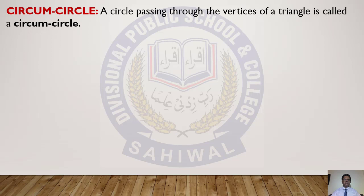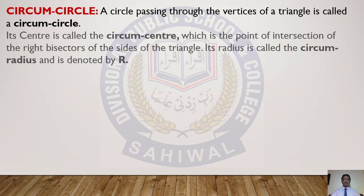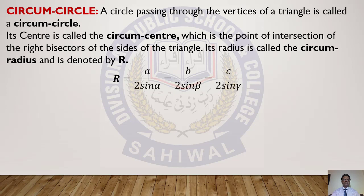Now we discuss some definitions. Circum-circle: a circle passing through the three vertices of a triangle is called a circum-circle. Its center is called the circum-center, which is the point of intersection of the right bisectors of the sides of the triangle. Its radius is called the circum-radius, denoted by capital R. The key relations are: R = a/(2 sin α) = b/(2 sin β) = c/(2 sin γ). Another important relation: R = abc/(4Δ).